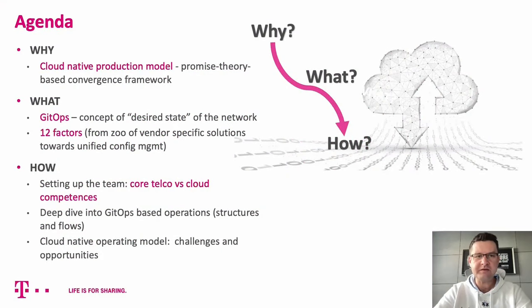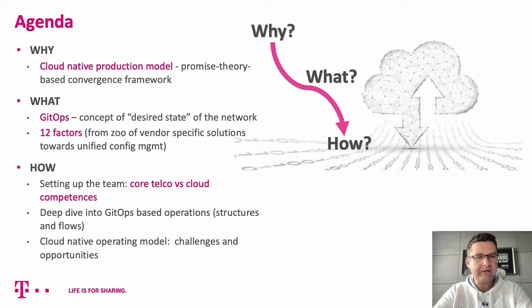In the course of this presentation, I would like to get you through three steps. Step number one is answering the question why — why we need a cloud-native production model at all. Once we cover this, we will focus on the what section, where I would like to mention the desired state concept and the 12 factors.